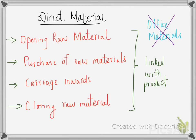Questions in a manufacturing account often give items such as office material or office costs — those will not be recorded in a manufacturing account because they are linked with an office. A manufacturing business is linked with the factory. So if you see factory wages, factory operatives, factory costs, or factory materials, you record those under the manufacturing account. Office material and office costs are not recorded there.